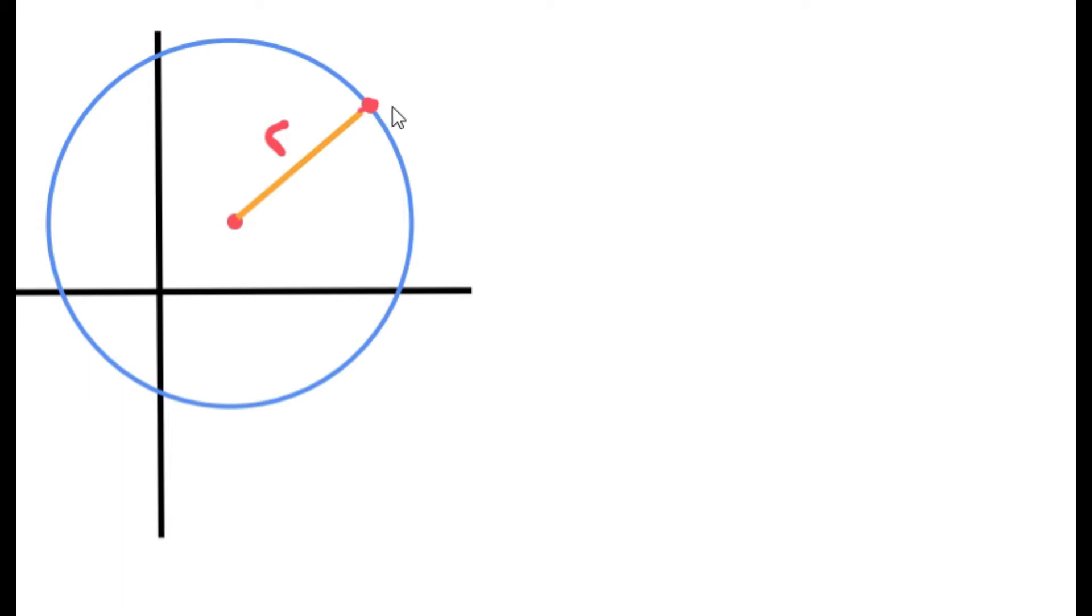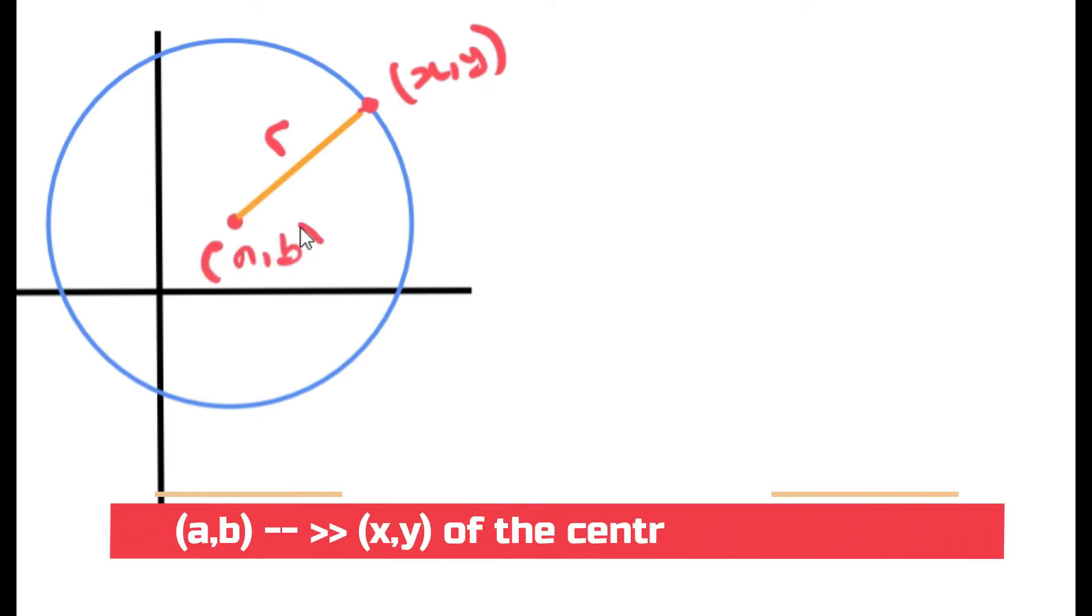We have a point here on the circumference. Let's call that x and y. And the center of the circle is normally represented as a and b, where a represents the x-coordinate and b represents the y-coordinate at the center.